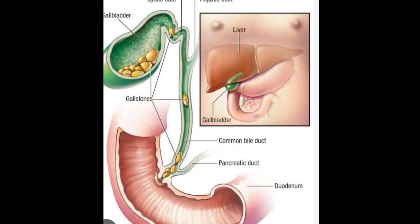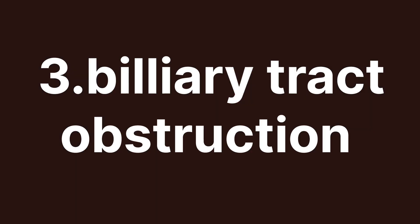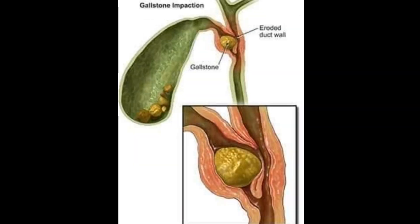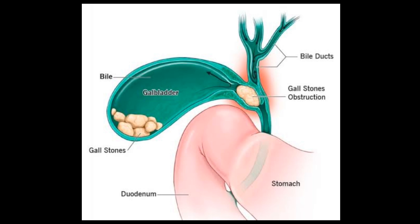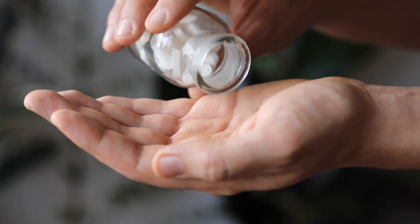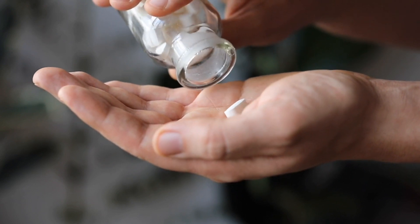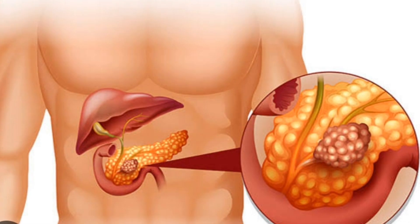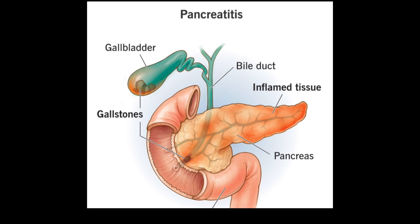Leading to reduced bile secretion. Three, biliary tract obstruction: any obstruction in the bile duct due to tumors, inflammation or gallstones can prevent flow of bile. Four, medication: some medicines, especially those affecting the liver or bile production, may contribute to low bile levels. Five, pancreatic disorders: conditions such as pancreatitis can affect the pancreas, which plays a role in regulating bile production.